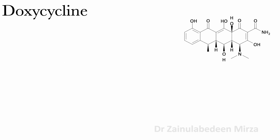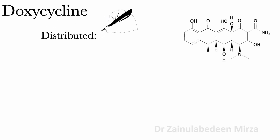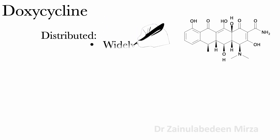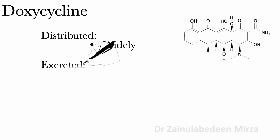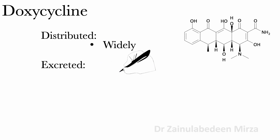Protein binding of doxycycline is 90%. Doxycycline is widely distributed except in the central nervous system. Doxycycline is excreted in urine and feces.